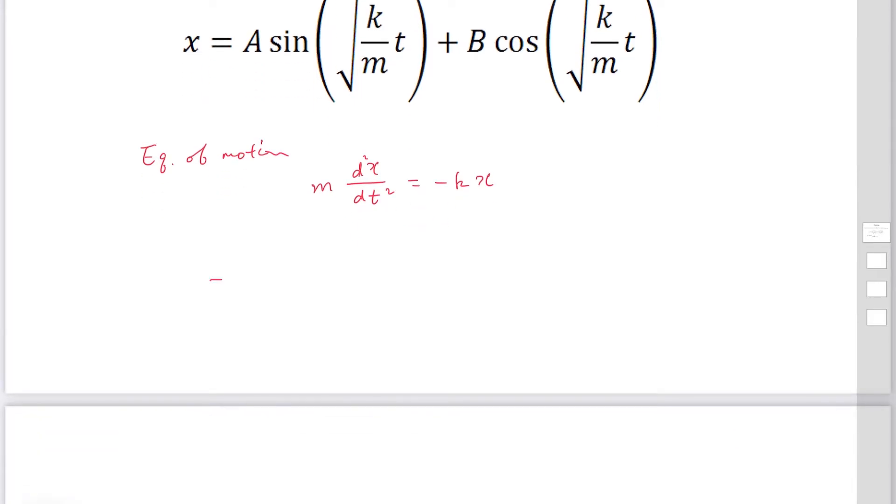The equation of motion is written as a second order differential equation: second derivative x with respect to t plus k over m x equals 0.